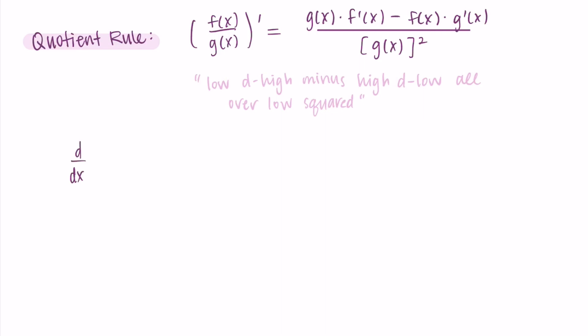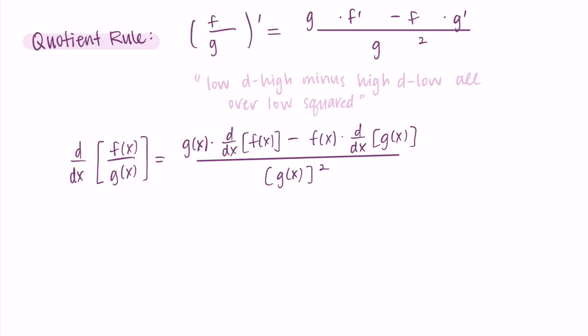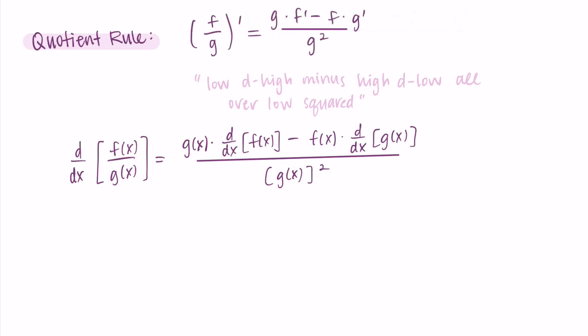As always, we can use other notation to write out the quotient rule: the derivative with respect to x of f divided by g is equal to g times the derivative of f, minus f times the derivative of g, all over g squared. I tend to simplify this and write: (f/g)′ = (g·f′ − f·g′) / g squared. This is what I'll use as we continue through examples.